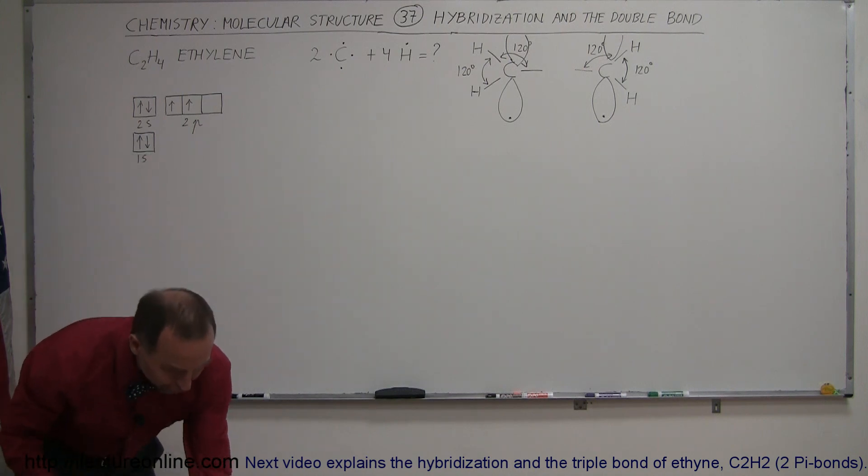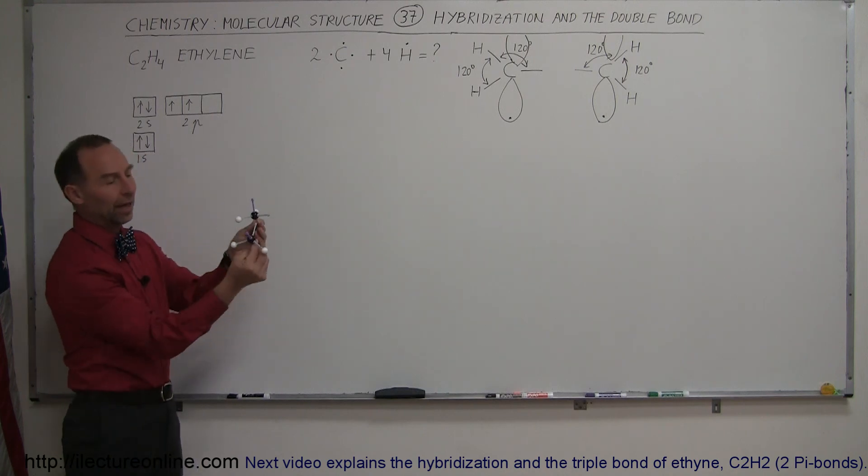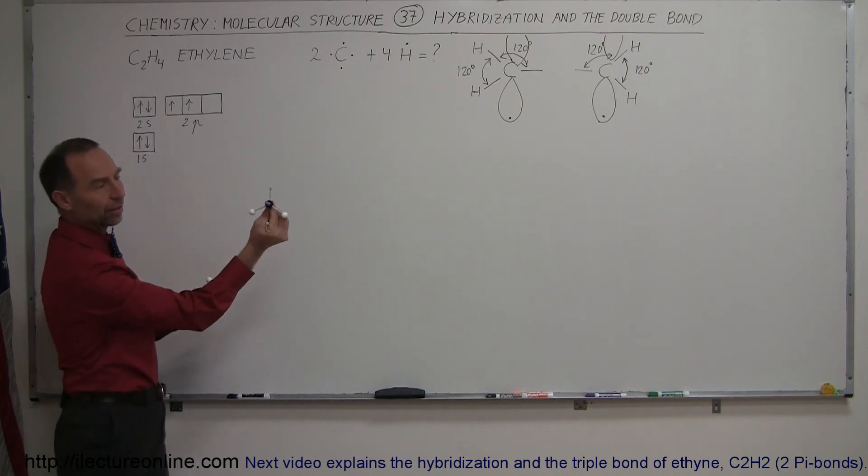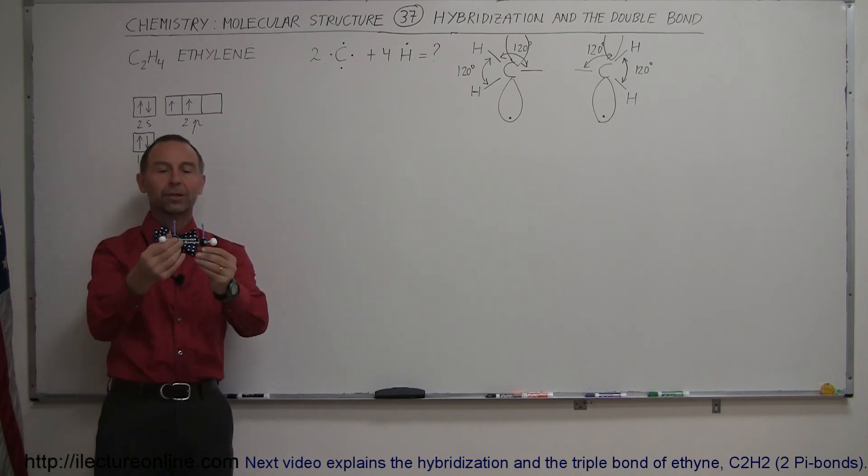Instead, what we should be realizing that, indeed, we have the two carbons like this, with the two hydrogens at 120 degrees. You can see it like that. And now 120 degrees between the two hydrogen bonds and the bond that would then connect the carbon like this.